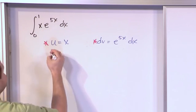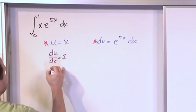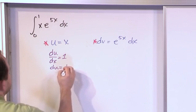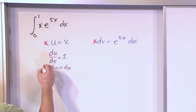So for this guy, du with respect to x is just equal to 1. So this means du is equal to dx. Okay, that is the other piece of information we need.